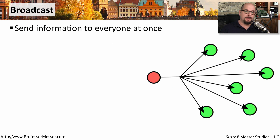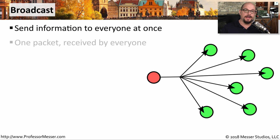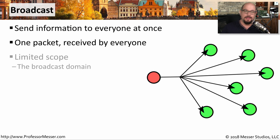A broadcast is the opposite of a unicast. One device is communicating to every other device on the network all at the same time. This one device would send one packet, and that single packet would be received by everyone else on that local network. There is a limited scope to these broadcasts — that's why we have a broadcast domain that limits the number of devices that might receive a broadcast put onto a local subnet.